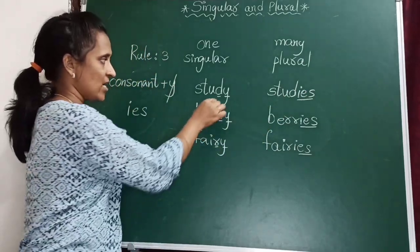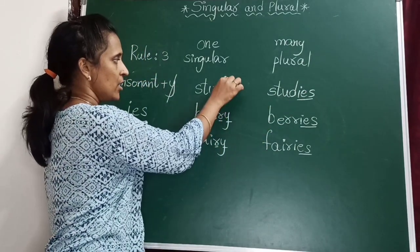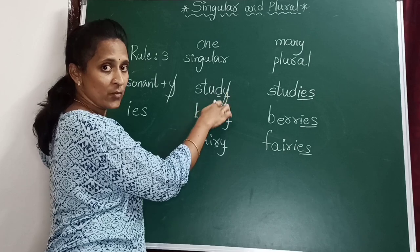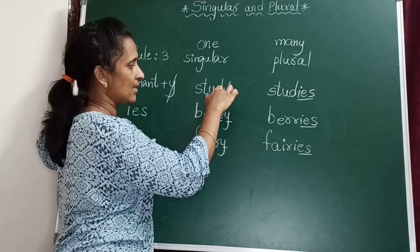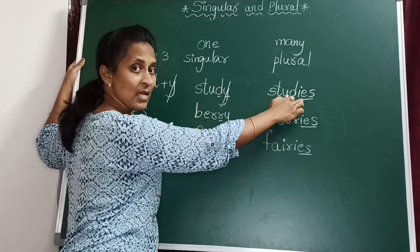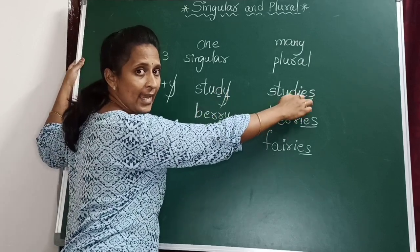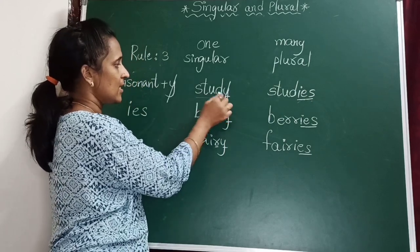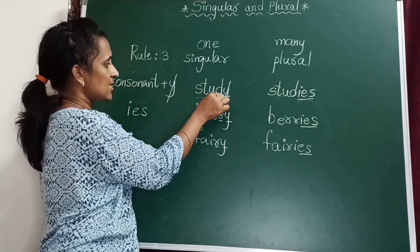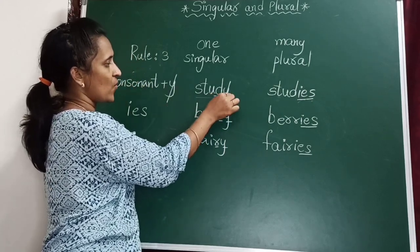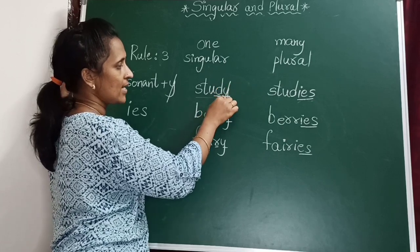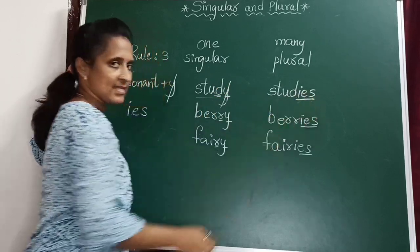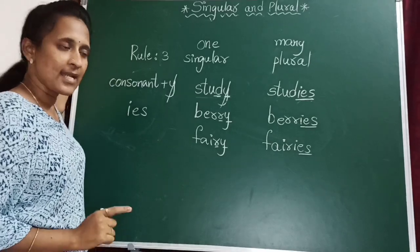Remember this carefully — don't add Y, children. You have to drop that Y, meaning you should remove the Y. And in the place of Y, you have to add IES. For example, study — D is a consonant, and Y is at the end — you remove Y and write IES: studies.